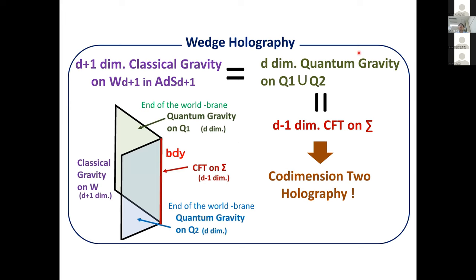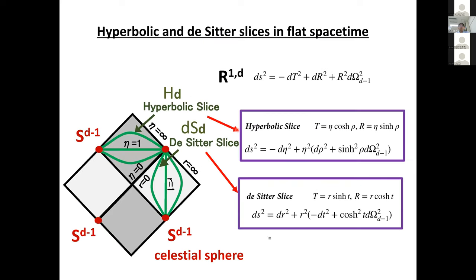A d+1 dimensional classical gravity on the wedge region is dual to a d-1 dimensional conformal field theory on the tip of the wedge. We can interpret this co-dimension-two holography as a double holography: starting with classical gravity in the wedge region dual to a theory on the end-of-the-world brane, which has a profile of d-dimensional anti-de Sitter space. With Neumann boundary conditions instead of Dirichlet, we apply AdS/CFT one more time, giving a d-1 dimensional CFT on the tip. We can confirm this at the level of correlation functions, entanglement entropy, and free energy.